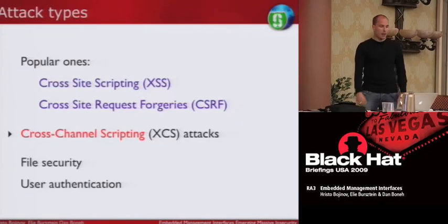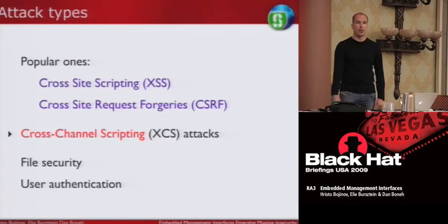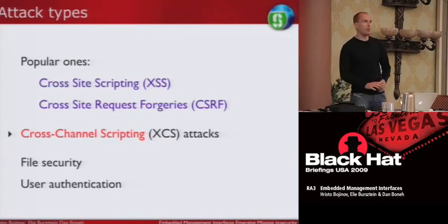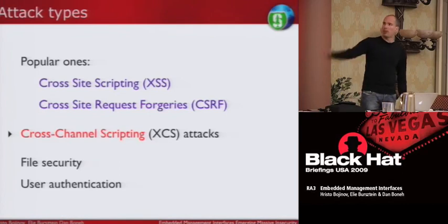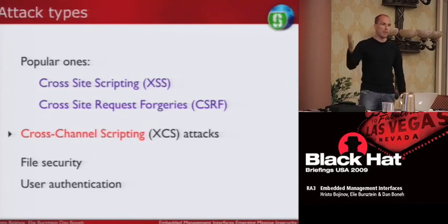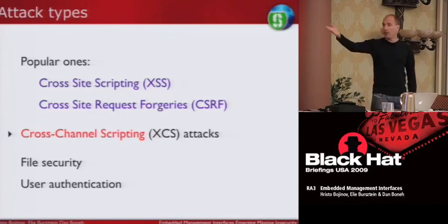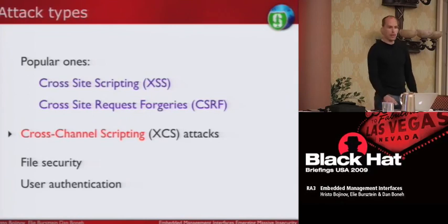What kind of attacks did we look at? First, cross-site scripting attacks — XSS — and CSRF. And we have one other thing which is kind of new that we term cross-channel scripting, or XCS. The idea is that instead of trying to inject through HTTP, you go through another channel like FTP, SMTP, or SMB. It's pretty effective on devices like NAS. We also looked at file security and of course user notification issues like bad passwords, no password, no HTTPS, and similar.